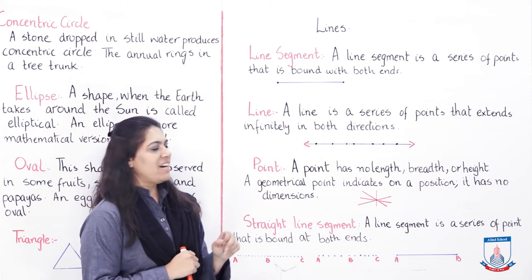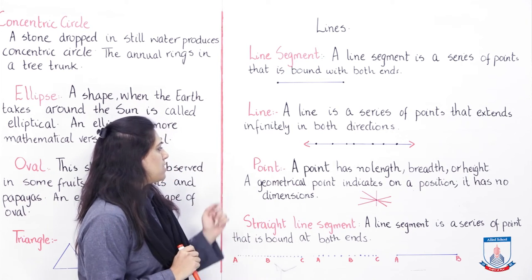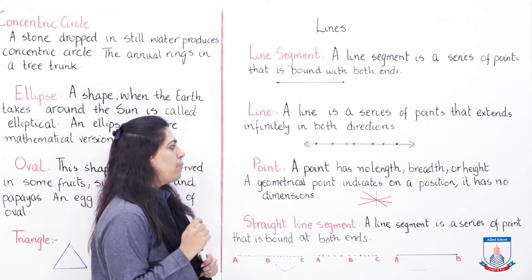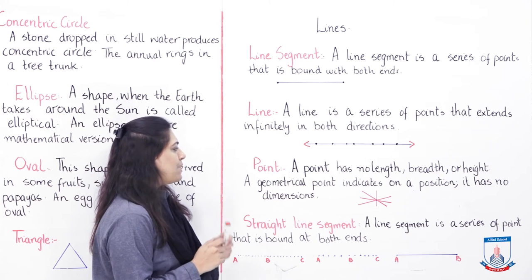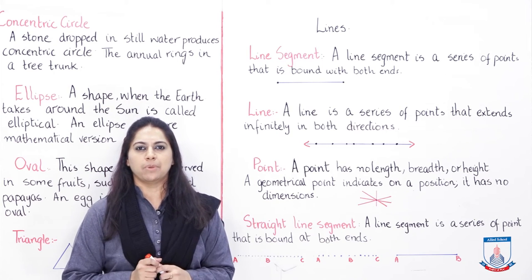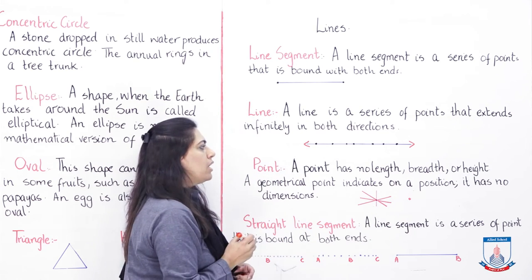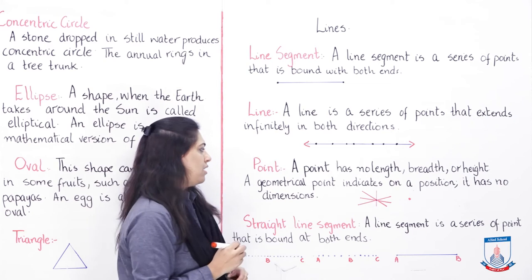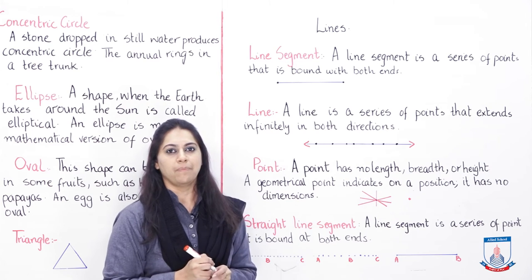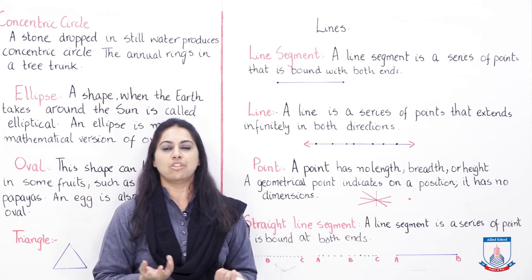This arrow means the line is moving infinitely - it keeps going. Now comes point. A point has no length, breadth, or height. A geometrical point indicates a position and has no dimension. A point is something that has no length, breadth, or height, but from a point we can join and create many lines.